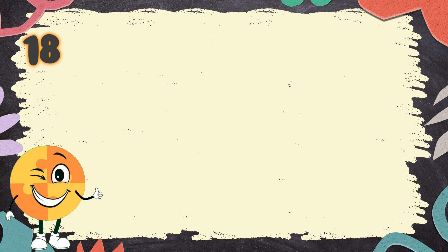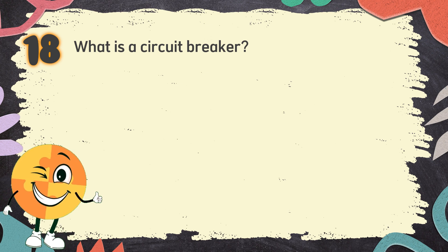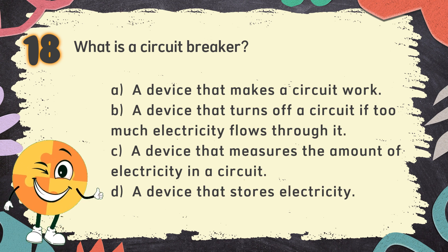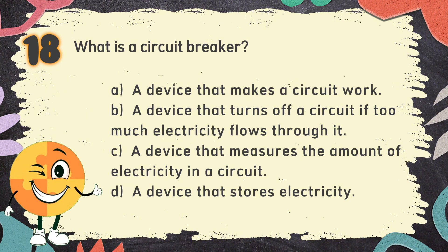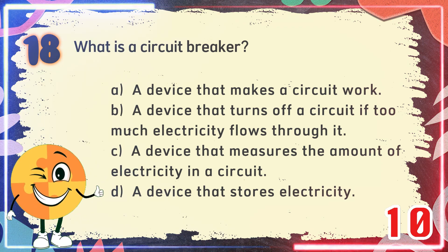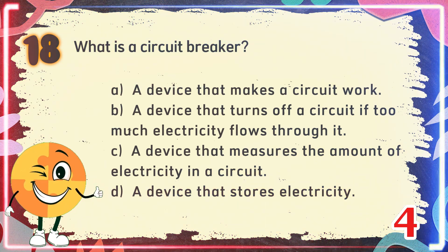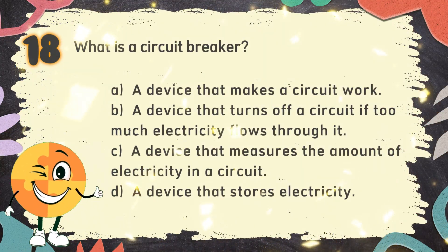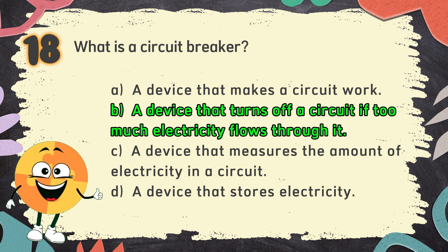Number 18. What is a circuit breaker? The choices are: A. A device that makes a circuit work, B. A device that turns off a circuit if too much electricity flows through it, C. A device that measures the amount of electricity in a circuit, D. A device that stores electricity. The correct answer is B. A device that turns off a circuit if too much electricity flows through it.